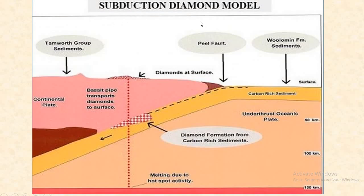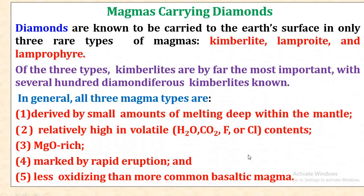This is the subduction model of the diamond, showing diamond formation where melting is due to hot spot activity. Here this is the diamond formation from carbon-rich sediments. Magma carrying diamonds — diamonds are known to be carried to the Earth's surface in only three rare types of magmas: kimberlite, lamproite, and lamprophyre.